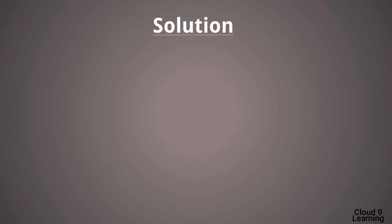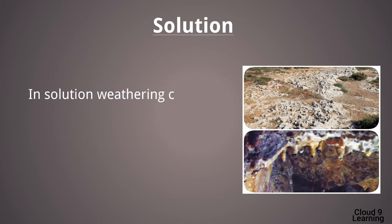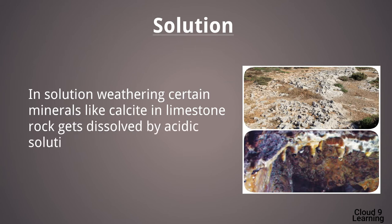The second type of chemical weathering is solution. In solution weathering, certain minerals like calcite in limestone rock get dissolved by acidic solution. When the water begins to evaporate, it releases the calcite, which forms chemically precipitated limestone. For example, at Wadgao Darya in Ahmednagar district, limestone gets precipitated chemically and undergoes chemical weathering. Also, because of solution, alkalies in rocks dissolve, making them brittle.